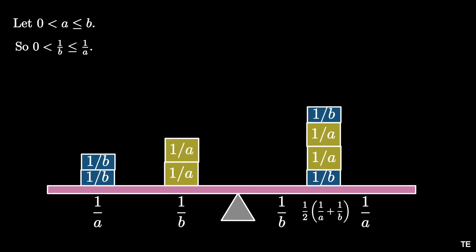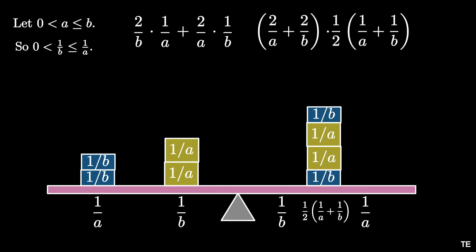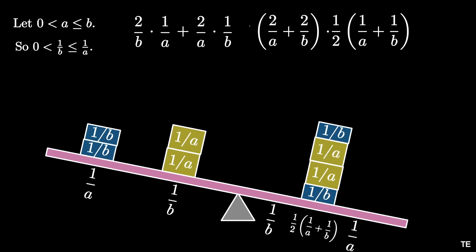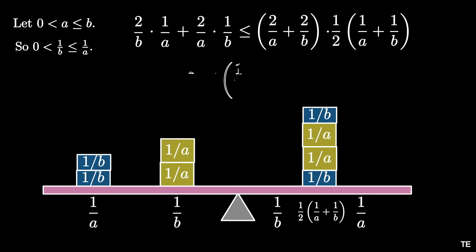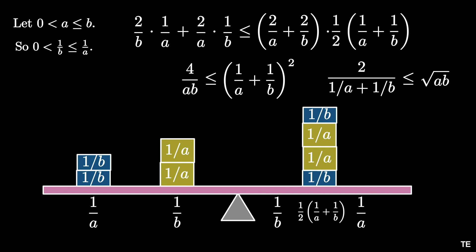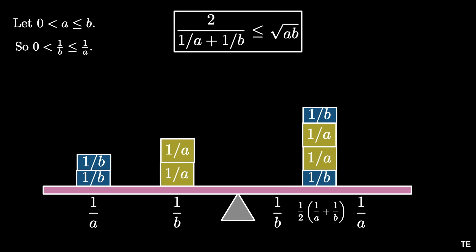Let's compare the moments. The left moment is (2/b)·(1/a) + (2/a)·(1/b), and the right moment is (2/a + 2/b)·(1/2)·(1/a + 1/b). Because the system rotates clockwise, the left moment is less than or equal to the right moment. The inequality simplifies to 4/(ab) ≤ (1/a + 1/b)², which eventually implies that 2/(1/a + 1/b) ≤ √(ab). This is the harmonic mean–geometric mean inequality.